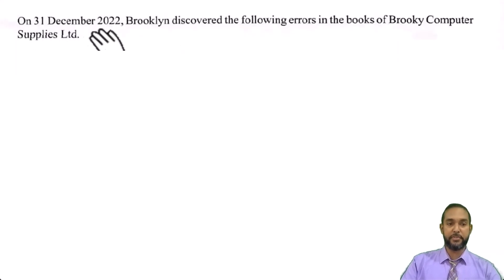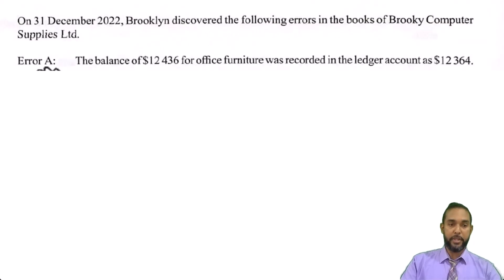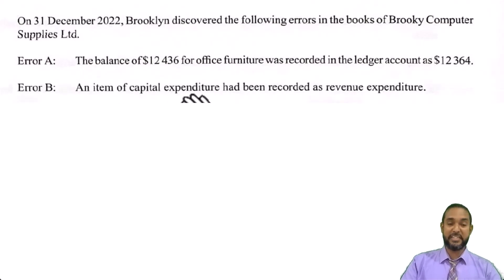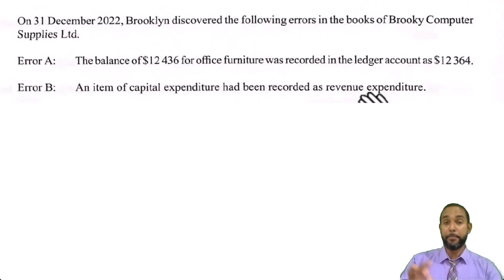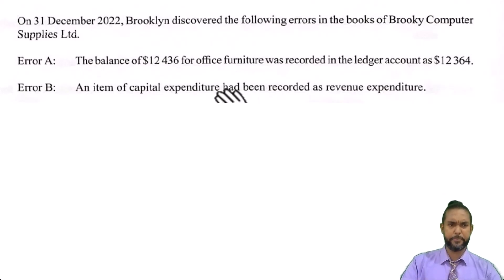Let's check out part B. On the 31st of December 2022, Brooklyn discovered the following errors in the books of Brookie Computer Supplies Limited. Error A: the balance of 12,436 for office furniture was recorded as 12,364 — that's an understatement. Error B: an item of capital expenditure had been recorded as revenue expenditure. Capital expenditure is expenditure on non-current assets — equipment, machinery, motor vehicles and the like. Revenue expenditure is any expenditure that is not capital expenditure — basically the things you'll see in the income statement: salaries, wages, insurance, rents, carriage outwards and that whole long list. So we have a misclassification here, which is going to cause an issue.